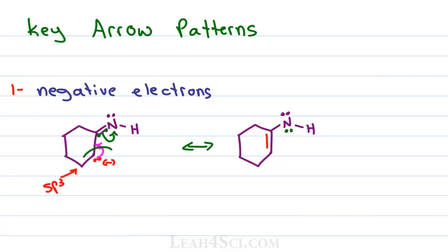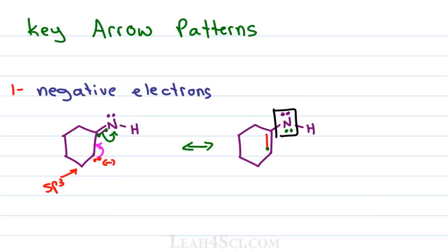The red electrons now sit as a pi bond between the former negative carbon and the former double-bonded-to-nitrogen carbon. The green electrons now sit as a lone pair on nitrogen. For formal charge: if carbon starts with a lone pair and forms a pi bond, the charge goes up by one — so a negative carbon becomes neutral. Nitrogen: we expect five electrons directly attached but count six, giving a formal charge of negative one. Don't forget your brackets. Conservation of charge: we start with negative one and end with negative one — charge is conserved.